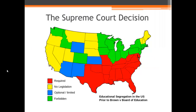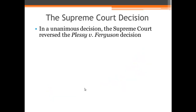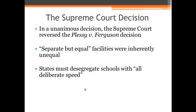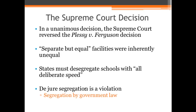To understand the Supreme Court decision, let's look at this map. Every state in red required segregation in schools — it was illegal for African Americans to attend schools with white people in those states. States in green did not allow segregation. In a unanimous decision, the Supreme Court reversed the Plessy versus Ferguson decision — the Supreme Court does not often reverse prior court cases, but they did here. They said that separate but equal facilities were inherently unequal and that segregation in schools is not constitutional. They told states they must desegregate schools with all deliberate speed, and also stated that de jure segregation — segregation by government law — is a violation.